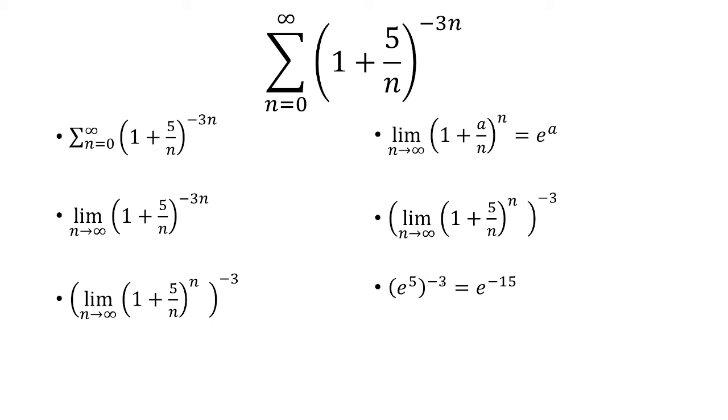So an exponent to an exponent, you multiply, get e to the negative 15. And because this is not equal to 0, the series diverges by the nth term test.